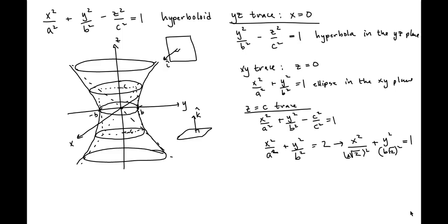This is the sketch of a hyperboloid of one sheet. It's called a hyperboloid of one sheet because there is only one surface. Other hyperboloids have two sheets, meaning two surfaces, but this hyperboloid of one sheet is one continuous surface, kind of looking like a nuclear cooling tower.